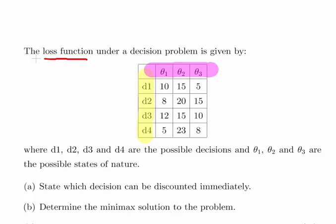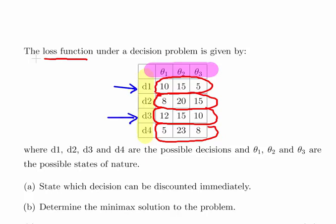The first question asks us to state which decision can be discounted immediately. So essentially what we have to do here is look at each of the rows and go through them and compare them item by item.